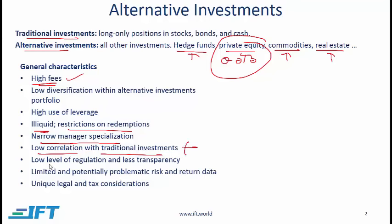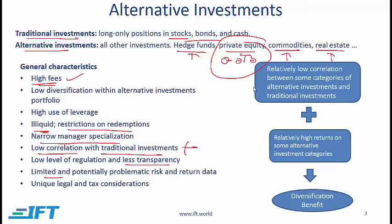There is a low level of regulation and therefore low transparency associated with alternative investments. There is limited and potentially problematic risk and return data — the past data is not as easily available as data for stocks and bonds — and often there are unique legal and tax considerations. From a portfolio perspective, the key point is that there is generally a low correlation between some categories of alternative investments and traditional investments. This, coupled with the fact that many alternative investments have a relatively high return, gives us a diversification benefit, and that's why in many portfolios a small component is allocated to alternative investments.